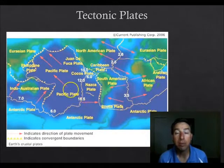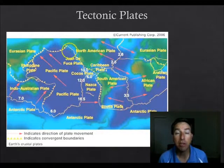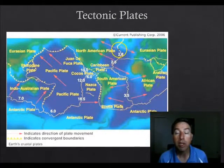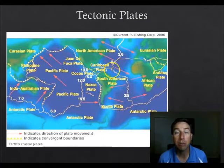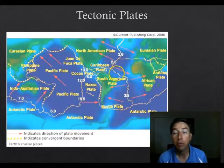This brings us to our modern theory, which is made up of two things: plate tectonics — how the plates move around — and seafloor spreading, which provides the mechanism for plate tectonics to occur. One of Wegener's major weaknesses was that he couldn't explain how these large pieces of solid earth were actually moving around, and the theory of seafloor spreading solved that.